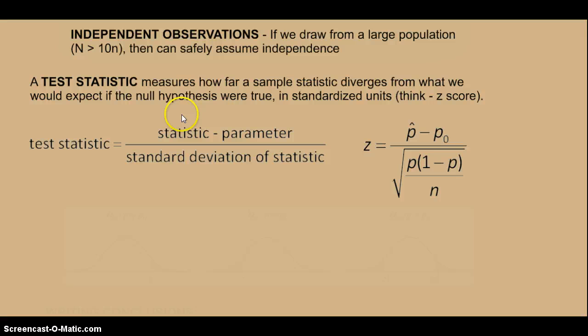A statistic back in Chapter 2 meant we had some x, we subtracted it from some mean, and we divide it by the standard deviation. Well, we're going to do the same thing here, except now we have the language of proportions. We're going to take our p-hat, subtract it from the hypothesized proportion, and divide by the standard deviation.